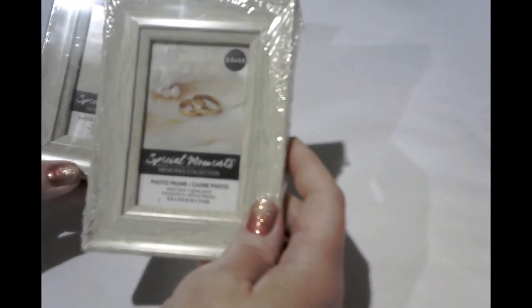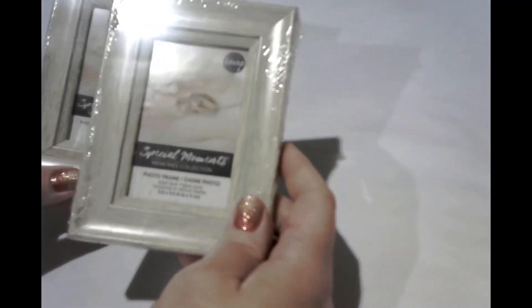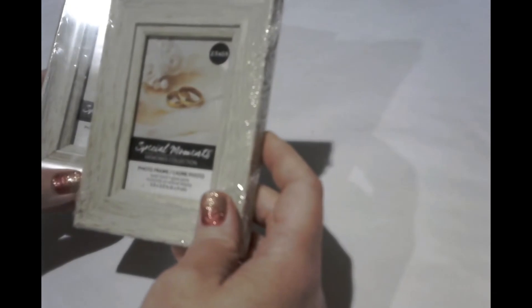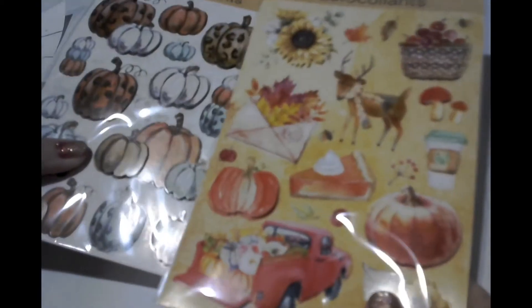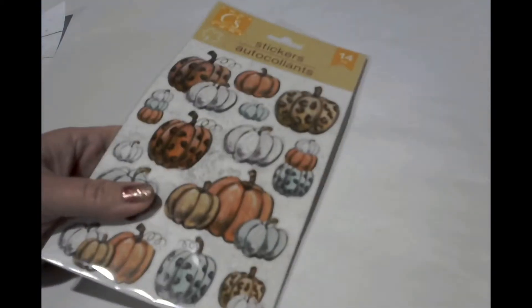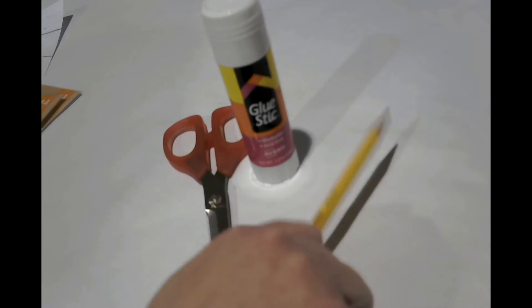For the second project, you'll need a couple of these faux wooden special moments picture frames from the Dollar Tree. These are two and a half by three and a half. You'll need some crafting paper. Once again, my favorite paper, you can get this at Hobby Lobby. You'll also need some fall stickers of your choice, depending on which way you want to go. And then you'll need some scissors and glue stick and a pencil.